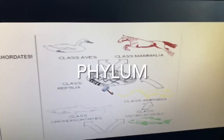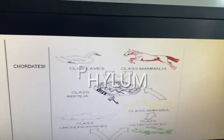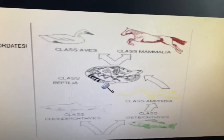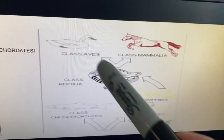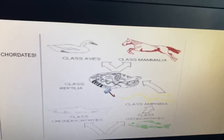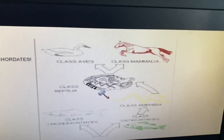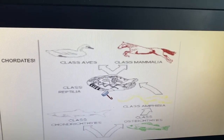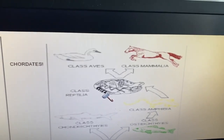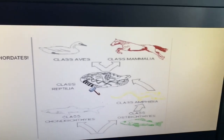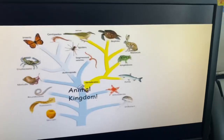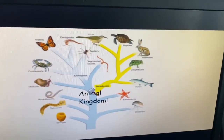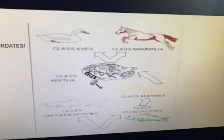Of all the animals, we are in the phylum Chordata, which means you and I have more in common with ducks and snakes — because we have backbones and a spinal cord — than we do with an earthworm.